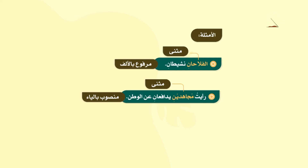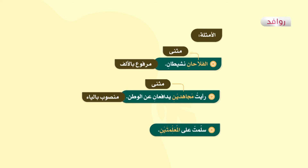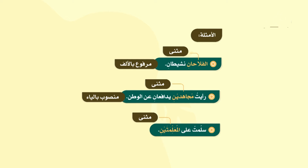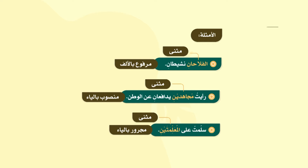المثال الثالث: سلمت على المعلمتين. المعلمتين: مفرد أم مثنى أم جمع؟ مثنى. ونلاحظ هنا أن المثنى يأتي للمذكر والمؤنث، فقد جاء هنا بصيغة المؤنث: المعلمتين. وقد سبقها حرف جر، فما إعرابها؟ اسم مجرور، وعلامة جره الياء لأنه مثنى. فما إعرابها؟ اسم مجرور وعلامة جره الياء لأنه مثنى.